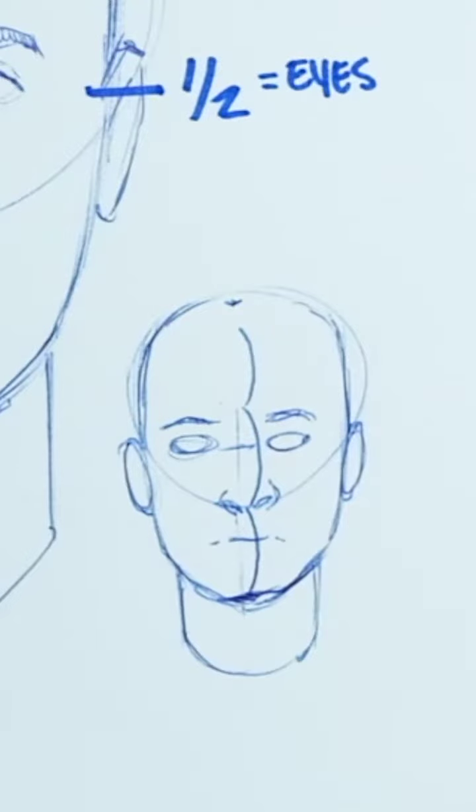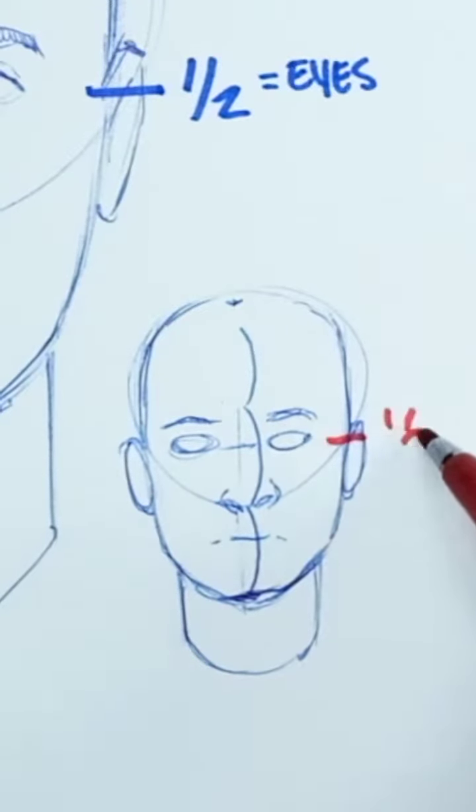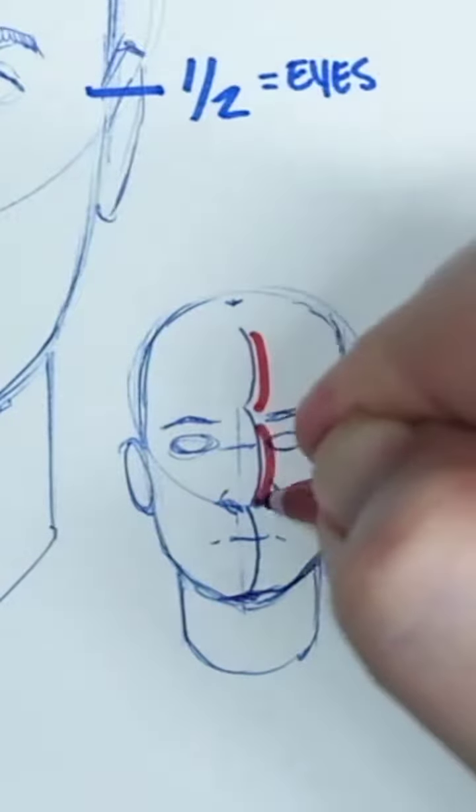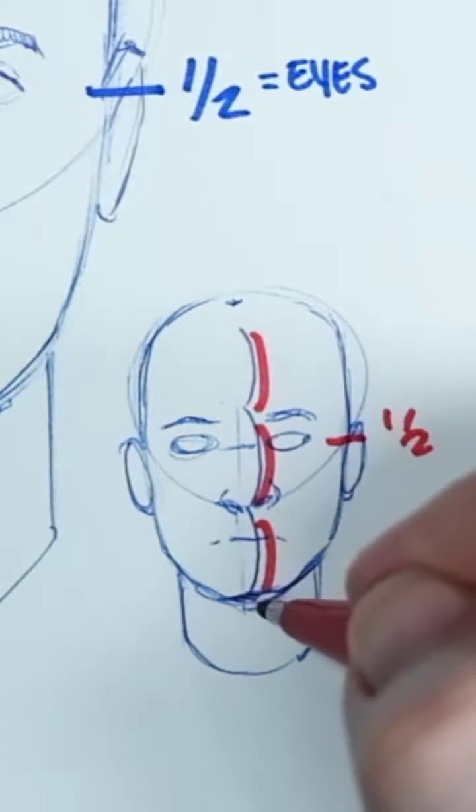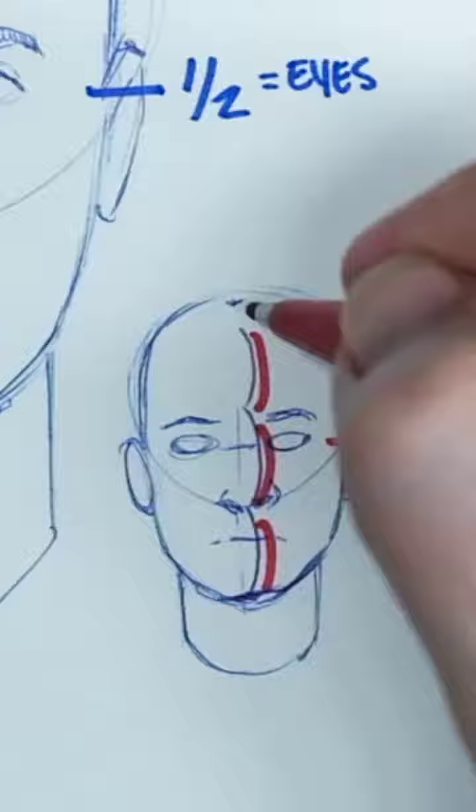So these would be the things that help us. The eyes are about halfway on the head. The head is about three units, right? Three equal parts across chin to nose, nose to brow, brow to hairline.